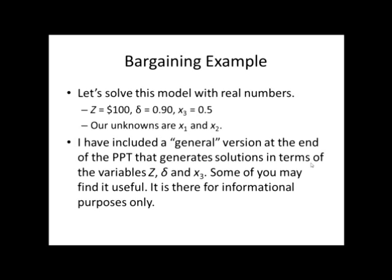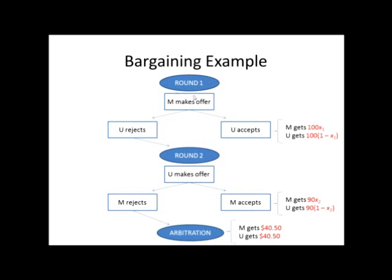Our unknowns are X1 and X2 — the offer that management will make and the offer that the union will make in the two rounds. This is what the game looks like. In round one, management is going to make an offer, and the union can either accept or reject that offer. Management's offer is going to be some variable X1. We don't know what it's going to be yet — we're solving for that. But it's going to be some fraction.